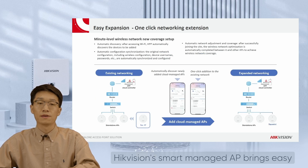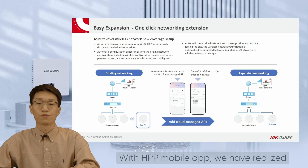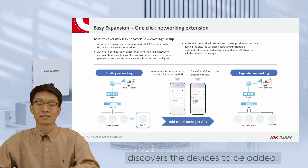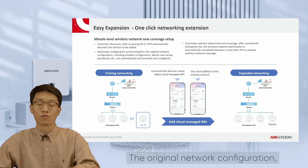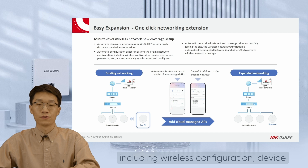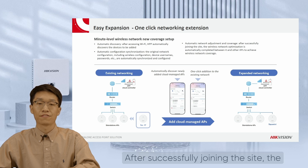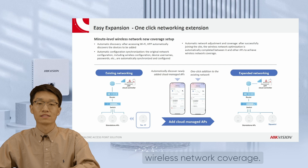HackerVision's Smart Managed AP brings easy expansion for existing networking structures. With the HPP mobile app, we have realized: 1. Automatic discovery — after accessing Wi-Fi, HPP automatically discovers devices to be added. 2. Automatic configuration synchronization — the original network configuration, including wireless configuration, device usernames, passwords, etc., are automatically synchronized and configured. 3. Automatic network adjustment and coverage — after successfully joining the site, wireless network optimization is automatically completed between it and other APs to achieve wireless network coverage.